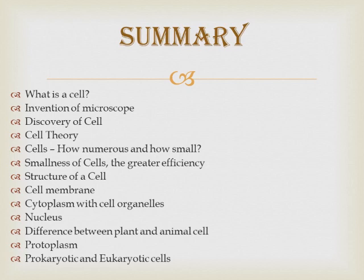The Golgi apparatus occurs in the form of granules or filamentous rods and is mainly concerned with secretion of the cell — enzymes and hormones are all secreted by the Golgi apparatus. Regarding cisternae, they are elongated, membrane-bound tubular sacs or bags. They are parts of both the endoplasmic reticulum and the Golgi apparatus.